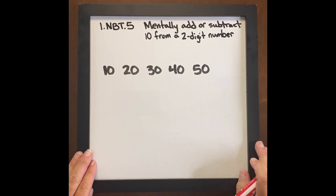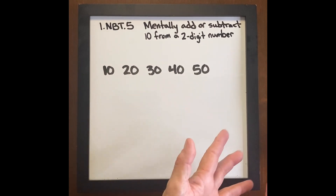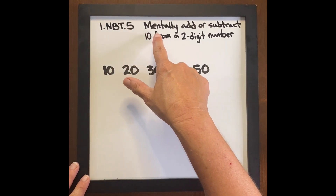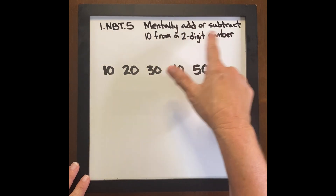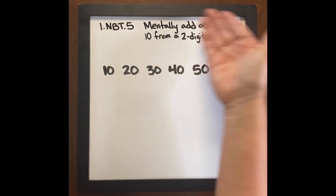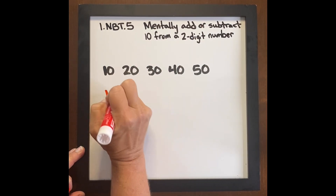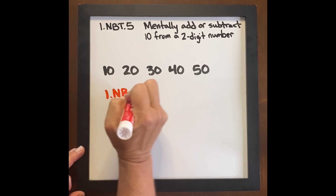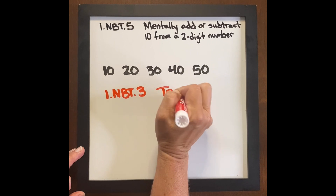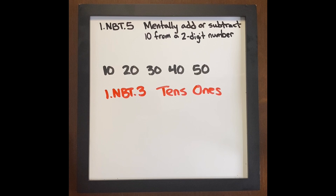When students learned to count by tens, they worked with decade numbers: 10, 20, 30, 40, 50, and so forth. So now we're moving into a different standard where we're asking students to mentally add or subtract 10 from a two-digit number. So if students are struggling with this standard, we want to take them back, because perhaps they could be struggling with NBT3, which is working with tens and ones — so they may not be making that connection.